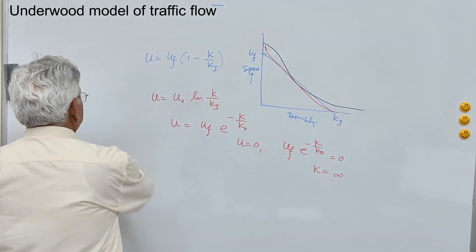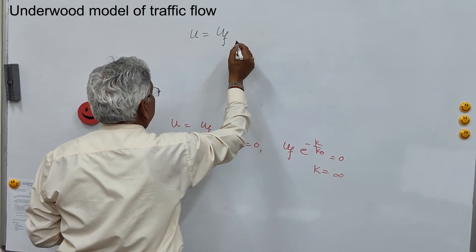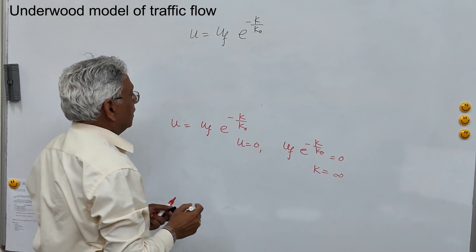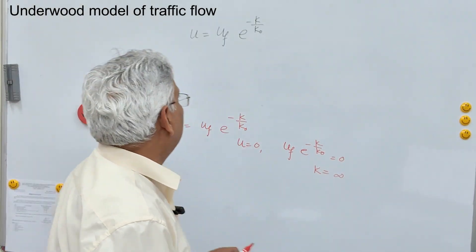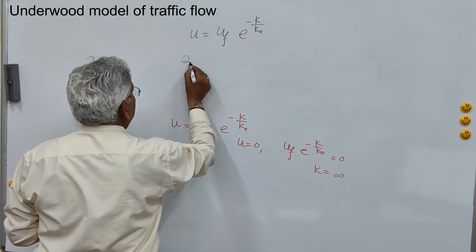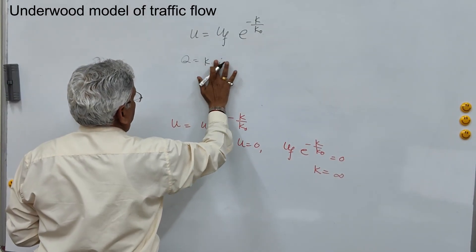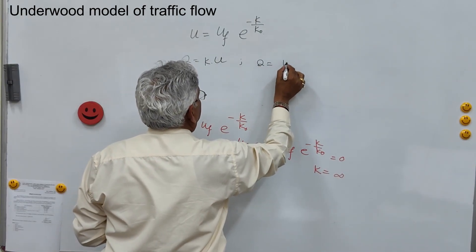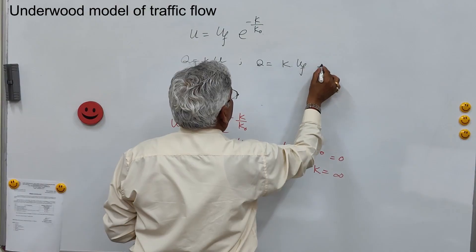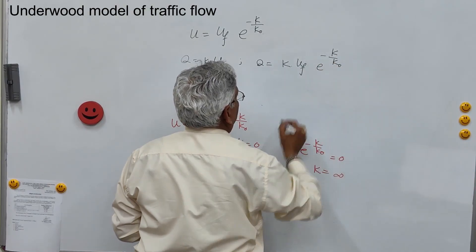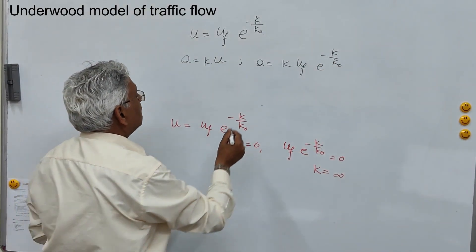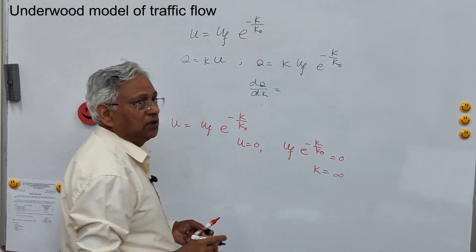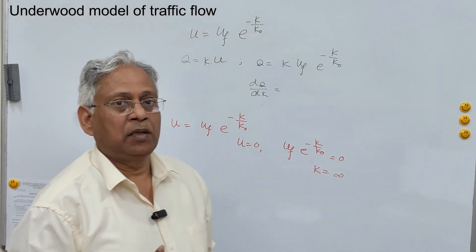The Underwood equation u equals uf times e to the power minus k upon k0 can also be used to find the capacity. Since q equals k times u, we get q equals k times uf times e to the power minus k upon k0. If you differentiate this equation with respect to k and set it equal to 0, you can find the optimum density.